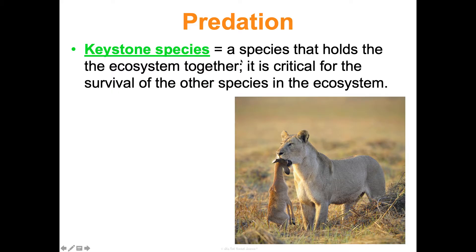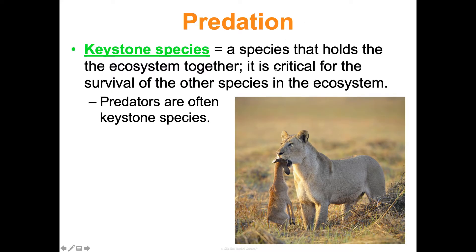A key definition here is keystone species — a species that holds the ecosystem together and is critical for the survival of the other species in the ecosystem. Predators often get a bad rap, but they're often keystone species because they keep the prey species from growing exponentially and out of control. This natural regulation keeps the entire ecosystem in balance.